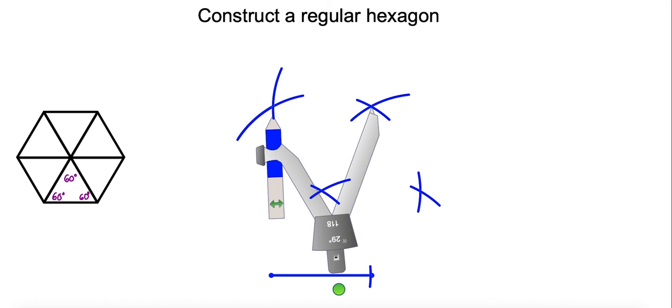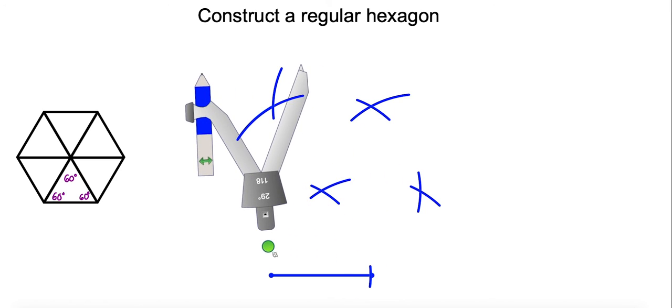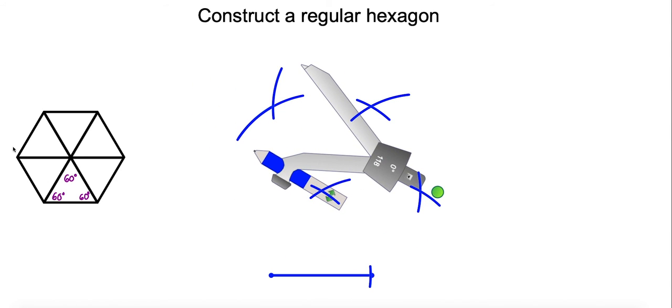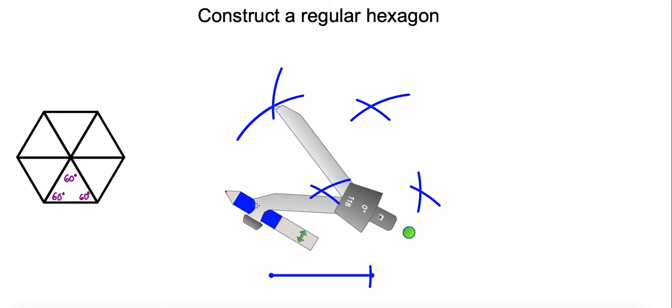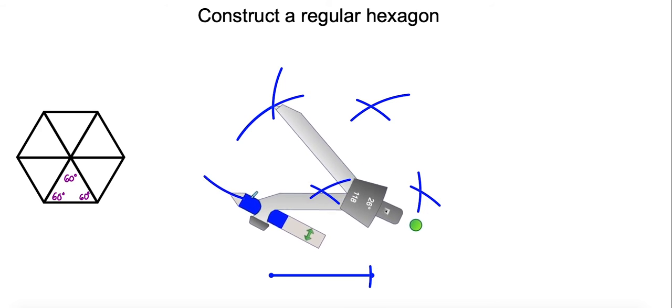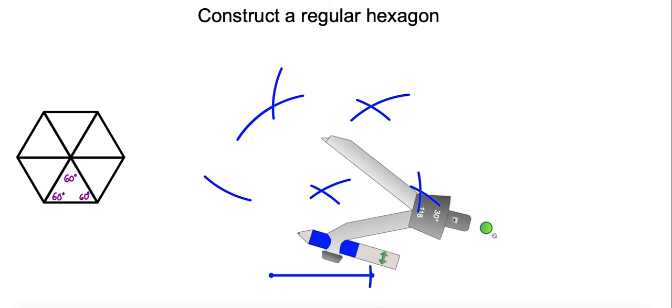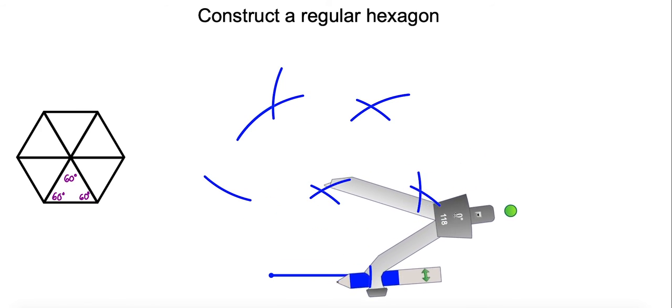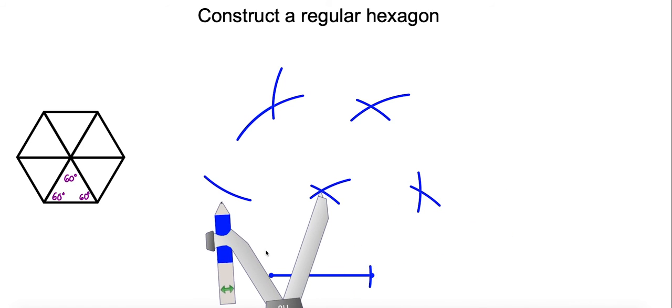There's the fifth one. For the last point, once again we're repeating this process. We're looking for the sixth point which is all the way to the west. We swing an arc this way and repeat this process from the center.